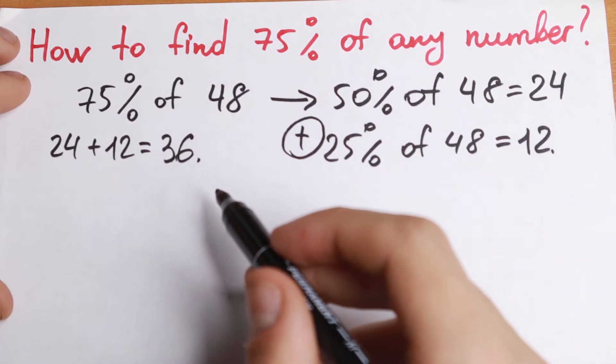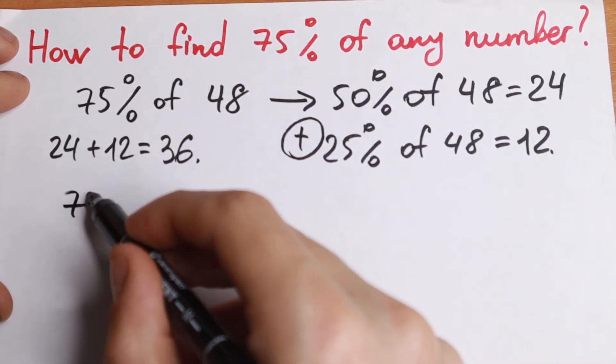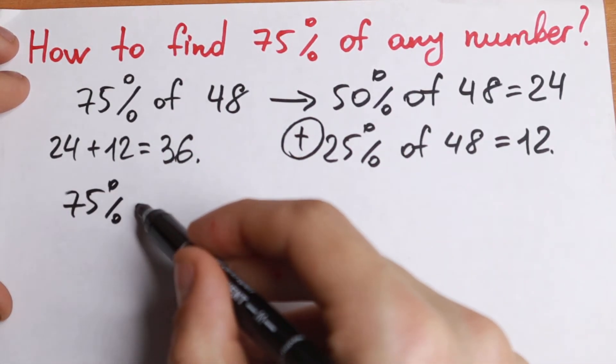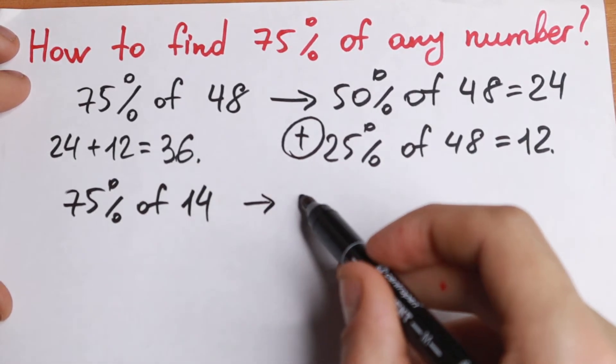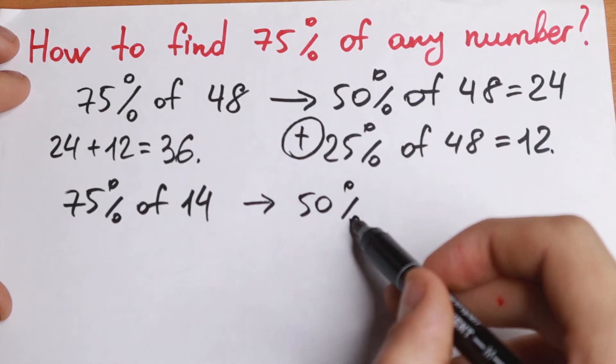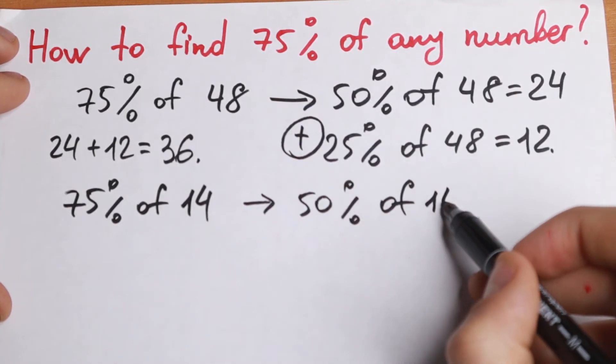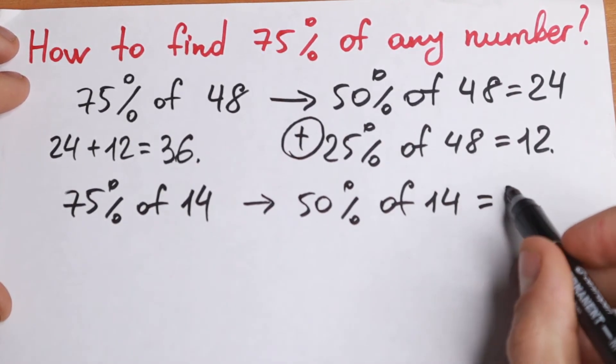Take a look at the second number. For example, let's find 75% of, for example, 14. So at first, as you can see, finding 50%, so the half of it, of 14, 50% of 14 equal to 7.